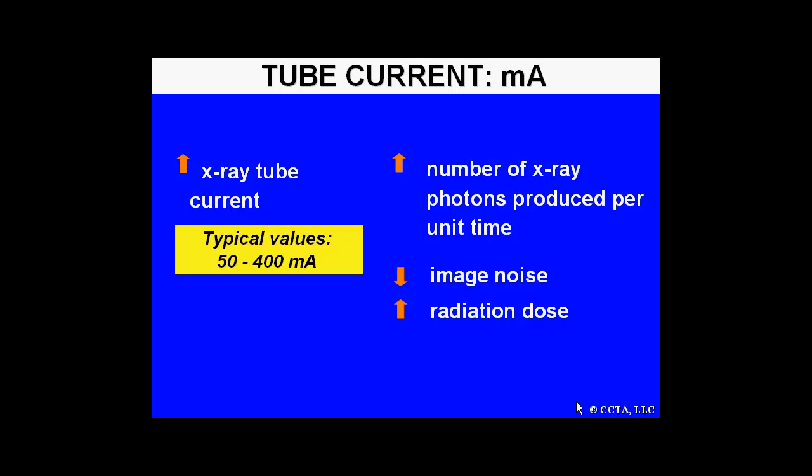The other parameter is the tube current, milliamperes or mA. Typical values range between 50 and 400. Increasing the x-ray tube current will increase the number of x-ray photons produced per unit time and decreases image noise, but also increases radiation dose.